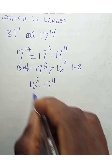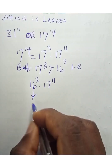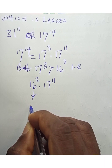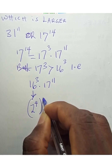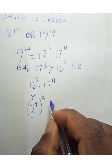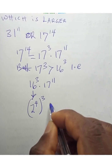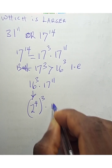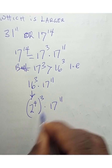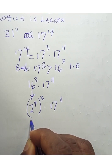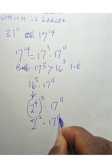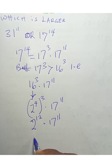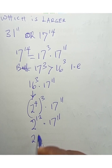Now, 16 to the power of 3 — we can write 16 as 2 to the power of 4, so 16 to the power of 3 is 2 to the power of 4 raised to the power of 3. Multiplied by 17 to the power of 11, this becomes 2 to the power of 12 times 17 to the power of 11.